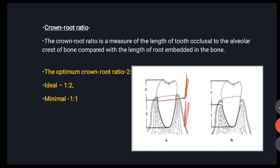The optimum crown-to-root ratio is 2:3. The ideal ratio is 1:2, and the minimum we require is 1:1. These values are important.